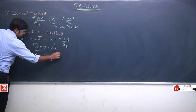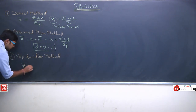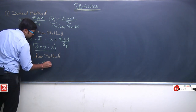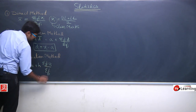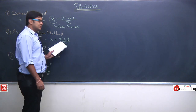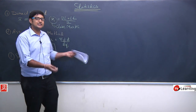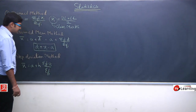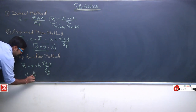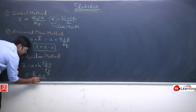If we still feel that the calculation is very long or complex, we go for the third method, which is the step deviation method. In the step deviation method, the mean equals assumed mean plus h times summation f_i u_i upon summation of f_i, where u is basically the step deviation.